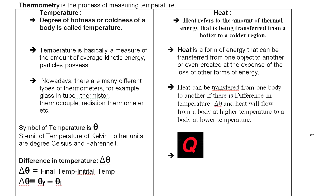If we move one body over another by friction, we can see that friction will generate heat energy. Heat energy is the energy transferred from a hotter region to a colder region. The third point: heat can only be transferred from one body to another if there is a temperature difference. This is the condition for heat transfer. So if there is Δθ, there is heat transfer.